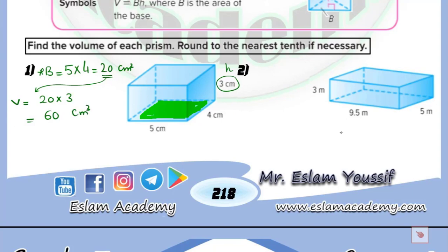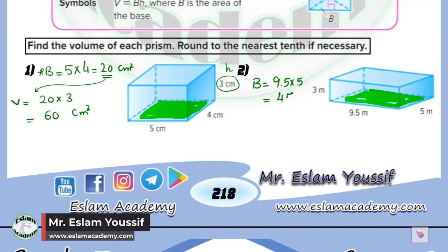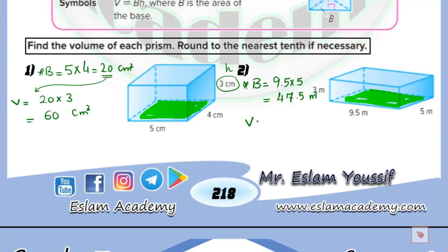One more time — to find the volume of a rectangular prism, identify the base. The area of the rectangle equals length multiplied by width, which is 9.5 times 5, giving us 47.5 square units. Then the volume equals 47.5 multiplied by the height, which is 3, giving us 142.5 cubic units. Remember: area uses squared units, volume uses cubic units.